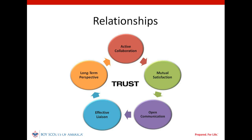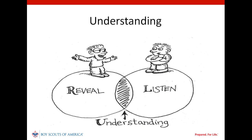Relationships are the foundation of effective collaboration — in fact, relationships are the foundation of effective unit service. Effective relationships are built upon trust, and trust is built upon understanding. Commissioners should seek to understand what motivates unit leaders to serve youth through scouting. Through that process, unit leaders should come to understand that the unit commissioner has only one objective: to help the unit better serve more youth through scouting.